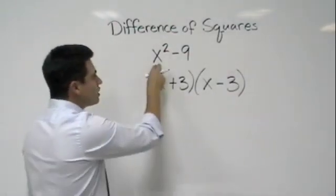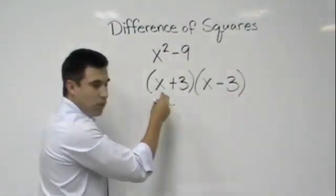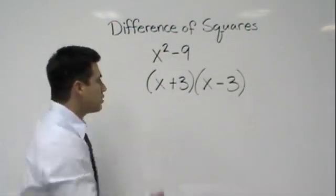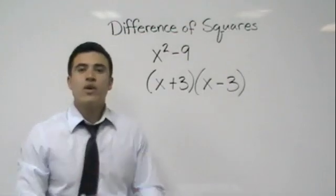Why? Well, because the square root of x squared is x, and the square root of 9 is 3, and then all we do is put a plus and a minus, and we are done.